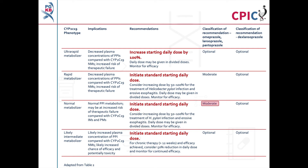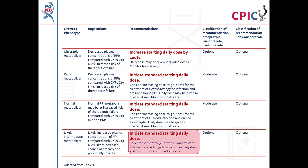For normal metabolizers, this is a moderate recommendation for lansoprazole, omeprazole, and pantoprazole, and an optional recommendation for dexlansoprazole. Patients with a CYP2C19 likely intermediate metabolizer phenotype are likely to have increased PPI concentrations. This likely increases PPI efficacy and potentially increases the risk of toxicity. These patients can be given the standard starting dose. A dose reduction of 50% can be considered for patients on chronic therapy where efficacy has been achieved. This is an optional recommendation for all four PPIs.